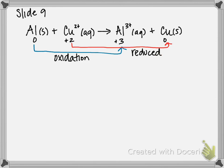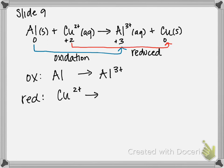The next step is to separate the two half reactions: a half reaction of oxidation and a half reaction of reduction. We separate them into two individual equations for the purpose of balancing. The oxidation half reaction is Al → Al³⁺, and the reduction half reaction is Cu²⁺ → Cu⁰.